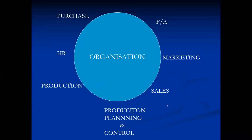In every organization we have many departments: finance and accounts, marketing, sales, production planning and control, production, HR, purchase, and so on. Every department has to work towards the achievement of the organizational objective — that is, maximization of profits. During this process, every department has its own goals and objectives which need to be synchronized with the organizational objective.